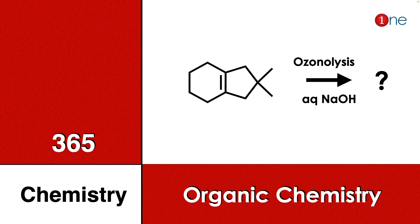Welcome to One Chemistry. This is the 365 Chemistry Series — organic chemistry questions. Here you have a five-membered and six-membered fusion ring with a bridged alkene and two methyl groups. You are doing voice analysis with base.